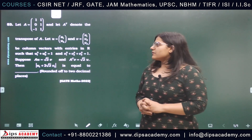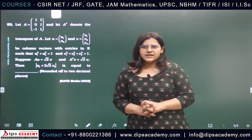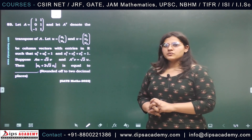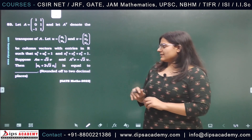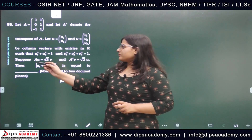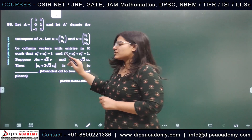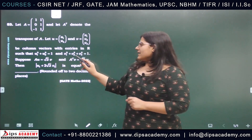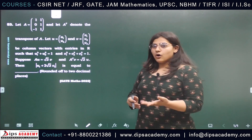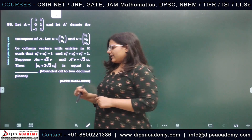The question number is 53. In this question, we have a 3×2 matrix given, two vectors — a 2×1 vector and a 3×1 vector — with some conditions on these vectors. The norm of each vector is 1: u1² + u2² = 1 and v1² + v2² + v3² = 1. Also, it is given that A·u = √2·v.